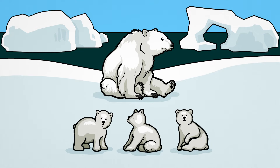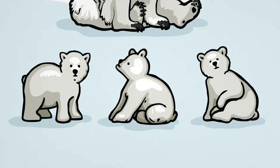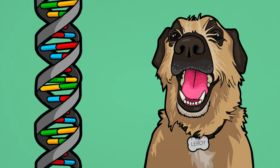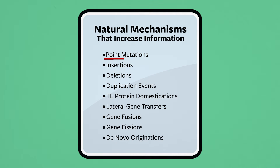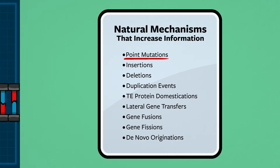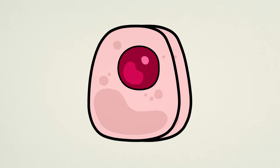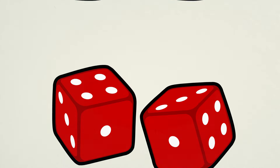We don't yet know for sure how the very first genes came about, but through careful genetic studies of living things in the wild, in the laboratory, and even in our own backyards, we've discovered many ways in which new genetic information evolves today. In this film, we'll look at the simplest mechanism: point mutations. A point mutation is any change that only affects a single pair of nucleotides, or letters, in the genetic code. They often occur when cells are reproducing, they appear to be mostly random, and they're surprisingly common.